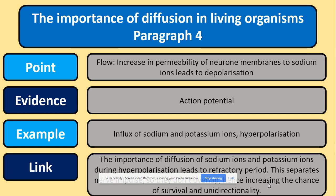From there, you can flow into paragraph four by saying that an increase in the permeability of neural membranes to sodium ions leads to depolarization. The evidence covers the action potential — you could describe the whole process — and your example could focus on hyperpolarization. The link: the importance of diffusion of sodium ions and potassium ions during hyperpolarization leads to the refractory period. The refractory period separates nerve impulses so they cannot overlap, increasing the chance of survival and ensuring unidirectionality, so the action potential can only be passed in one direction. Always use your key terminology and your five-markers as a link.